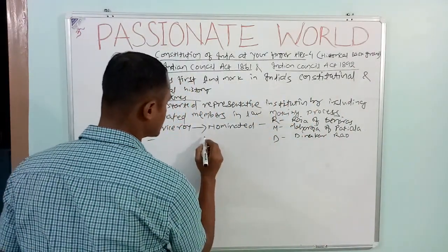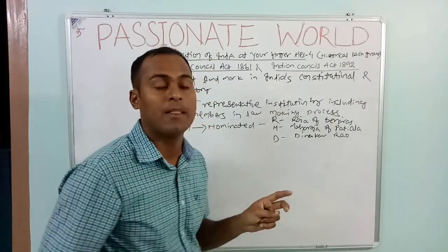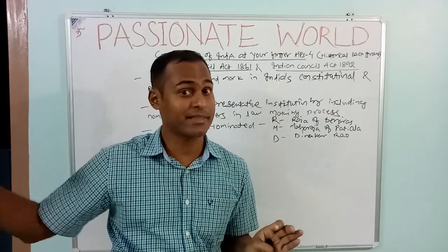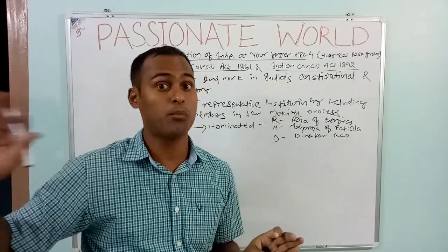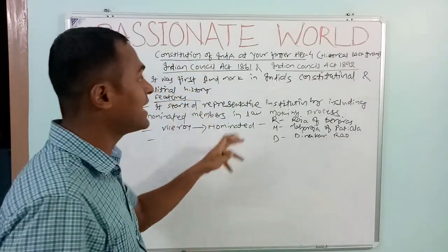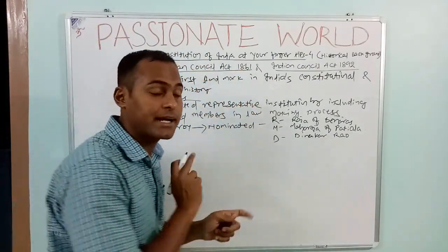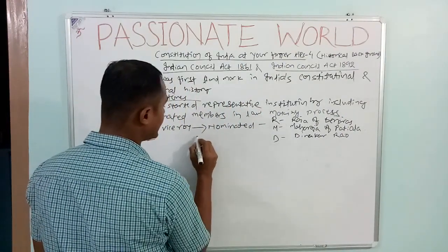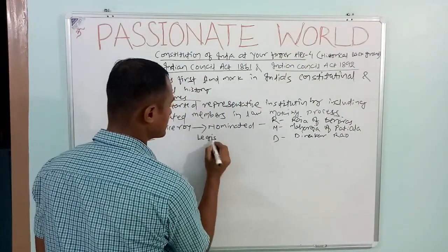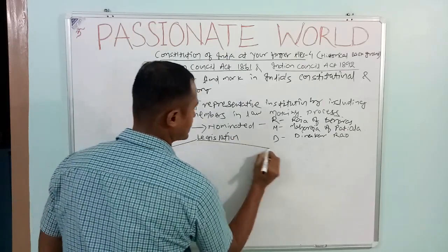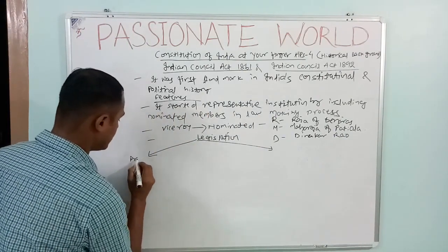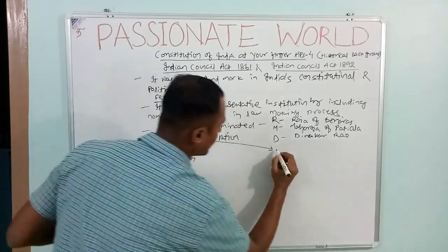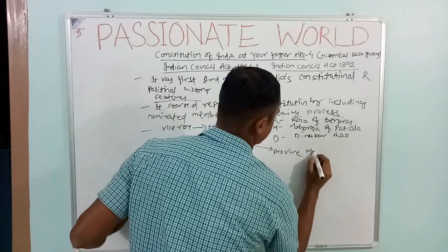After the nominated members, the process of decentralization started. Remember, the process of centralization started from the Regulating Act 1773 and continued up to the Charter Act 1833, which was the most centralized act. The process of decentralization started from 1861 and continued up to 1937 with provincial autonomy. From 1861, legislation was becoming decentralized.